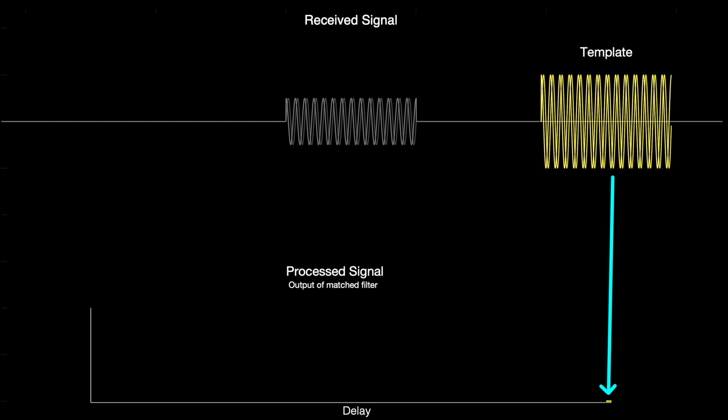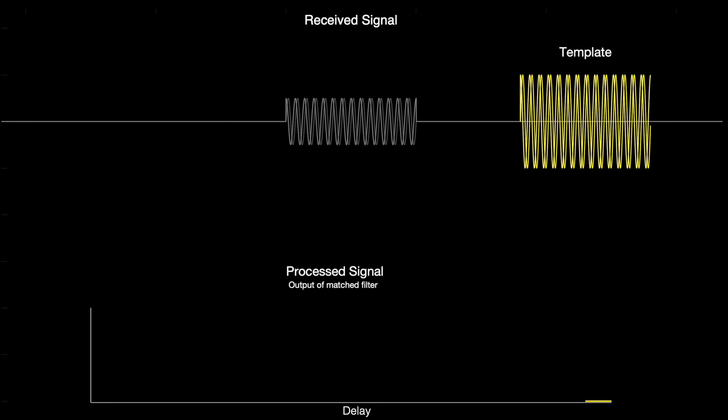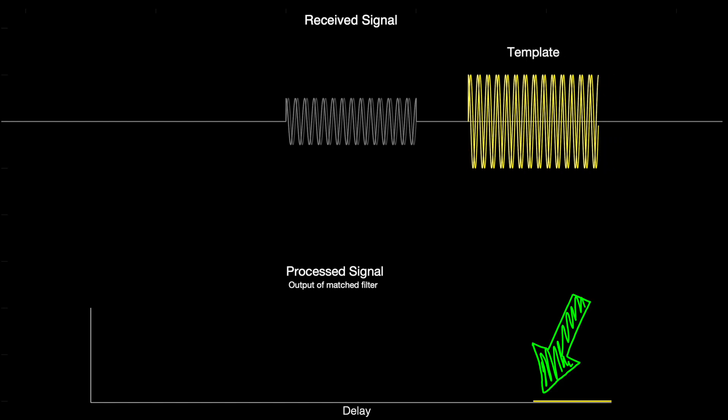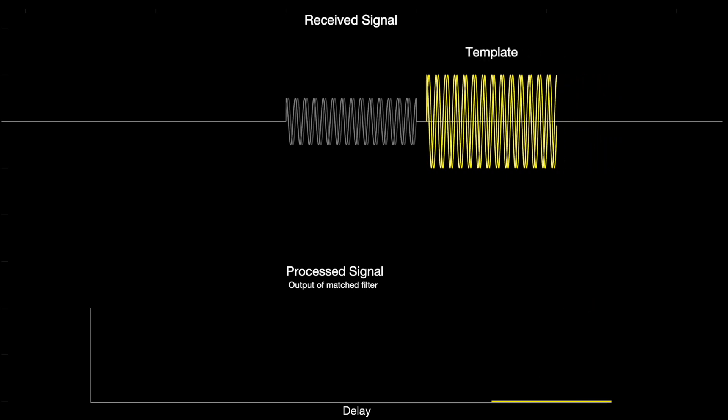Now, as the received signal comes in, we continue to check for the correlation between it and the template. And for a while here, it's all zeros. However, right at the start of the received pulse, there is some correlation between the two.